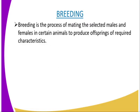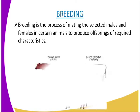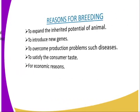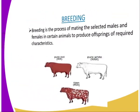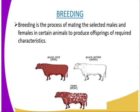What is breeding? Breeding is the process of mating of selected males and females of a certain animal to produce offspring of required characteristics. For example, you can have a look here — breeding of a pure red cattle and pure white cattle. And therefore, the resulting offspring, which is desired, with the desired characteristic, is a roan, which will have a mixture of red and white color.